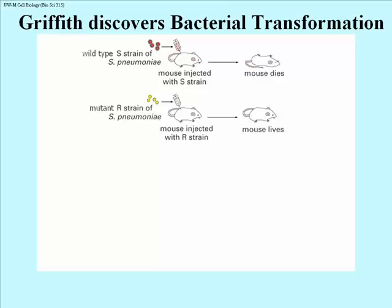There was a mutant strain called the R strain of S. pneumonia. The R stands for rough because the colonies produced would have a rough appearance. When these were injected into the mouse, the mouse survived.